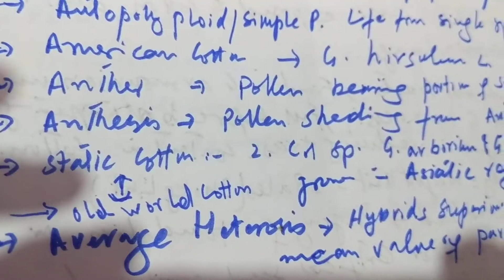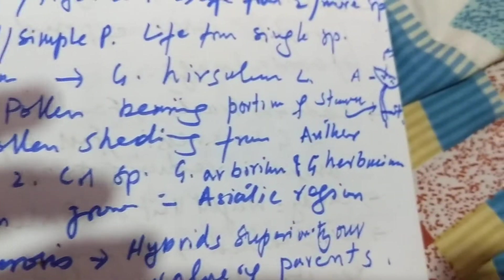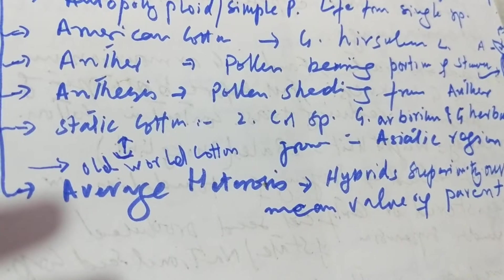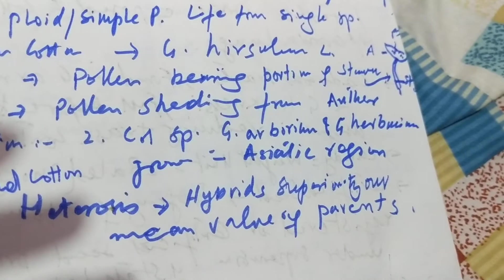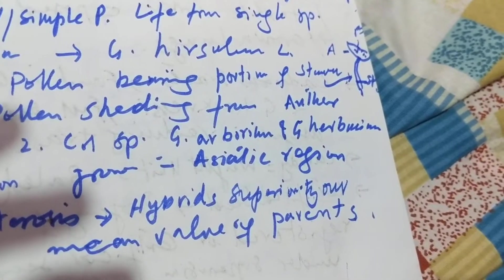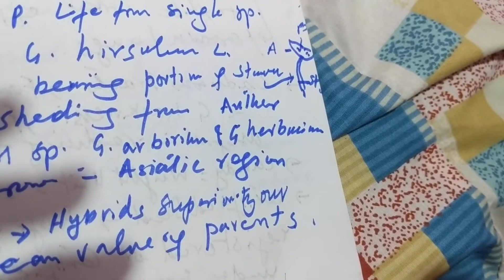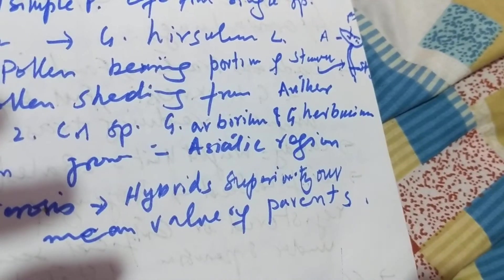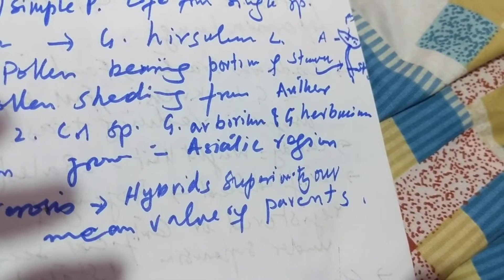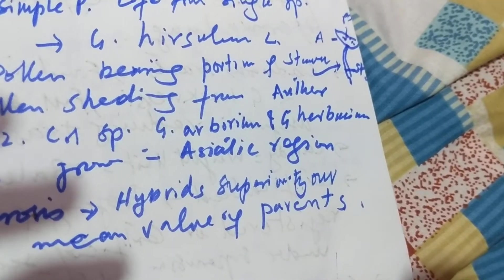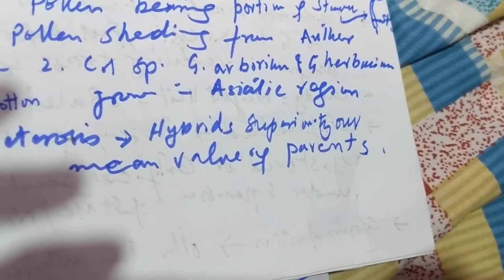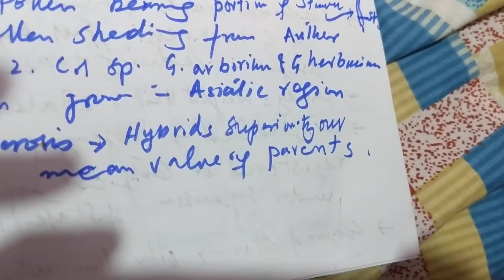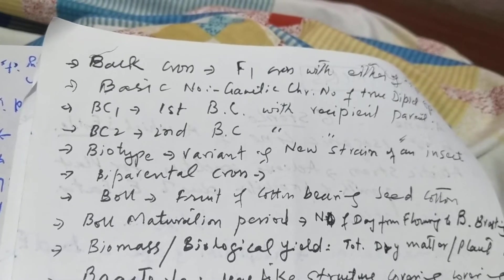Anther is the pollen-bearing portion of the stamen. Anthesis is pollen shedding from the anther. Asiatic cotton, also called old world cotton, includes two cotton species: Gossypium arboreum and Gossypium herbaceum, also called Asiatic, which are grown in the Asiatic region.